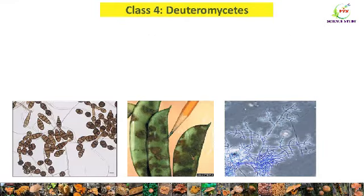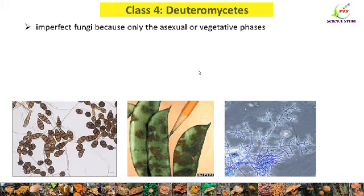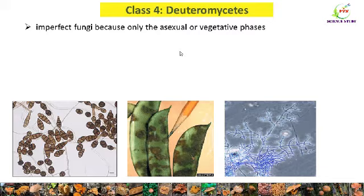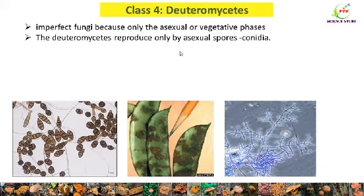Now we will study Class 4 — Deuteromycetes. The members of Deuteromycetes are commonly known as imperfect fungi, because here sexual reproduction is absent and only the asexual or vegetative phases are observed. Once perfect sexual stages of members of Deuteromycetes were discovered, they were moved to Ascomycetes and Basidiomycetes. The members of Deuteromycetes reproduce only by asexual spores — that is, conidia.